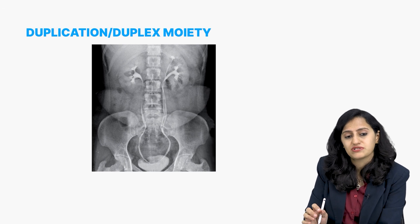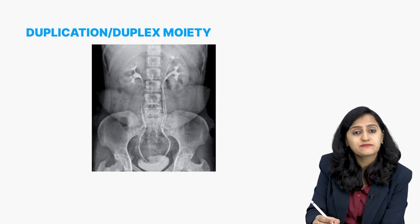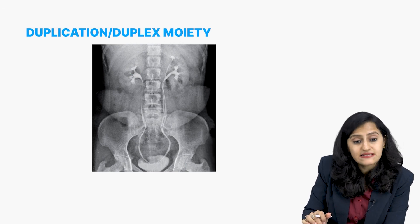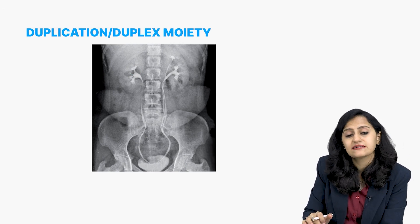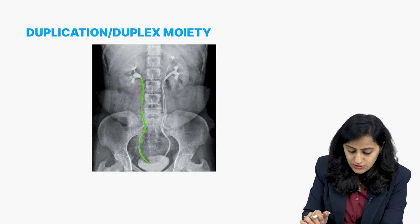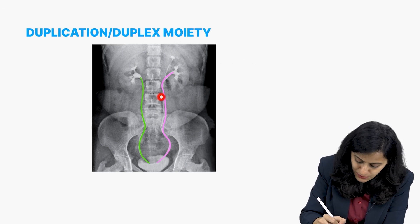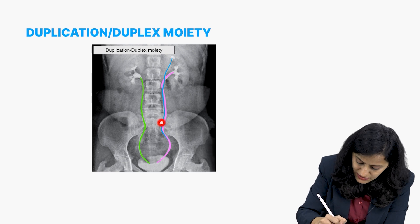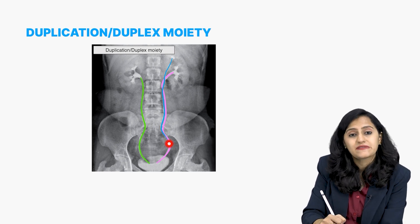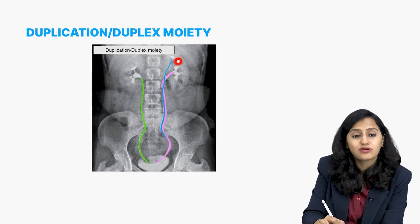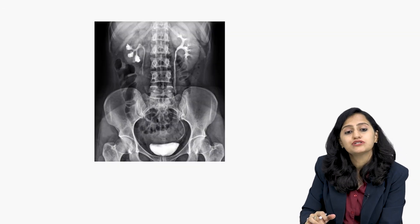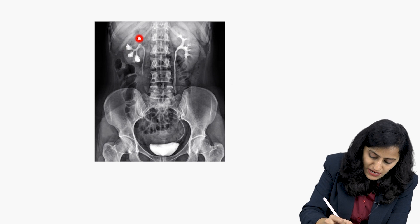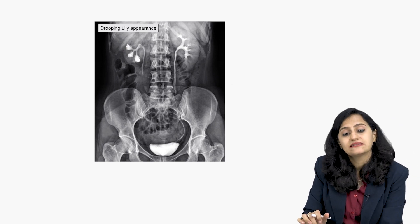Duplication or duplex moiety — how is it different? You see one kidney on the right side with one renal moiety. On the left side, there is one renal moiety with its ureter and another renal moiety with its ureter — two moieties on the left side. That is why this is duplication or duplex moiety.